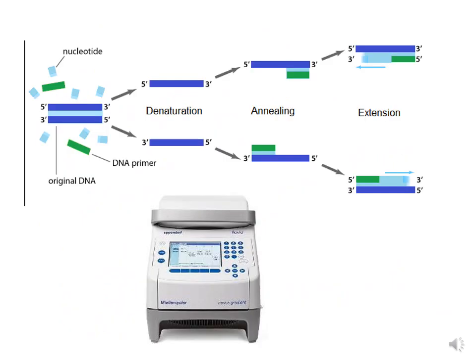There are three reactions in the technique of PCR: denaturation, annealing, and extension. In the first step, denaturation, the two strands of DNA represented in blue are separated at high temperature. In the second step, annealing, the primers represented in green get annealed to the target DNA according to their homology. In the third step, extension, the primer is extended by Taq polymerase in the 5' to 3' direction. At the bottom you can see the picture of a thermocycler or PCR machine.